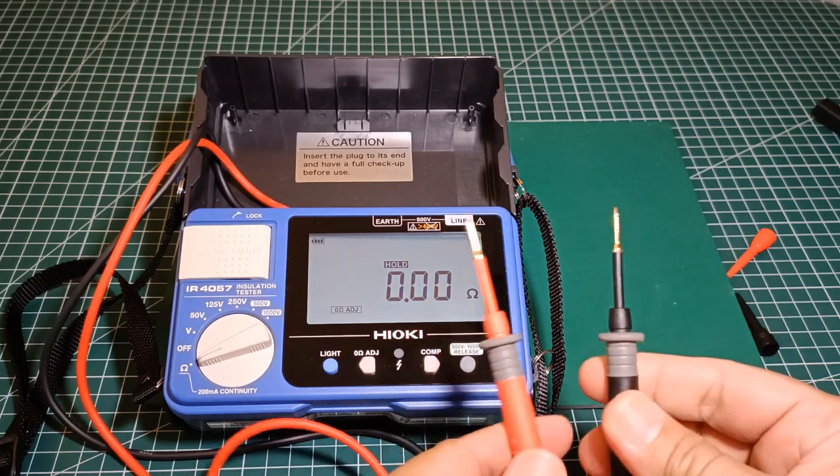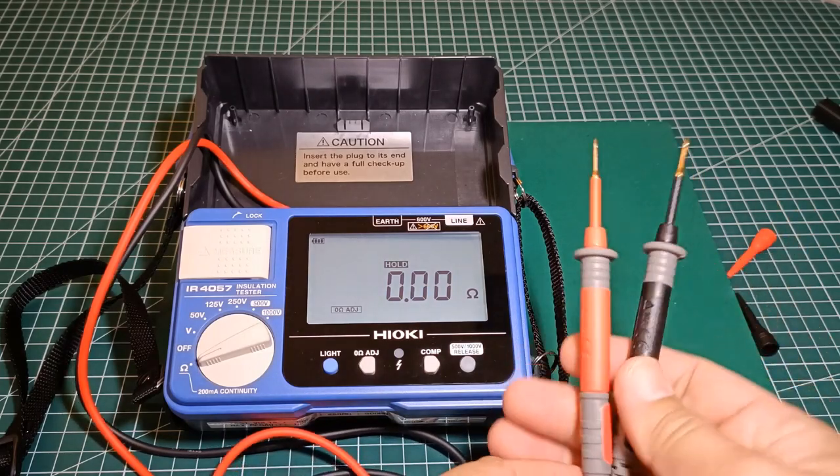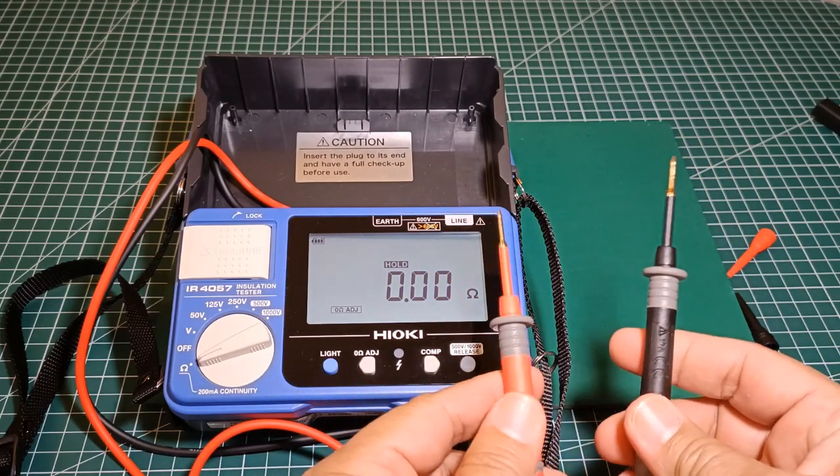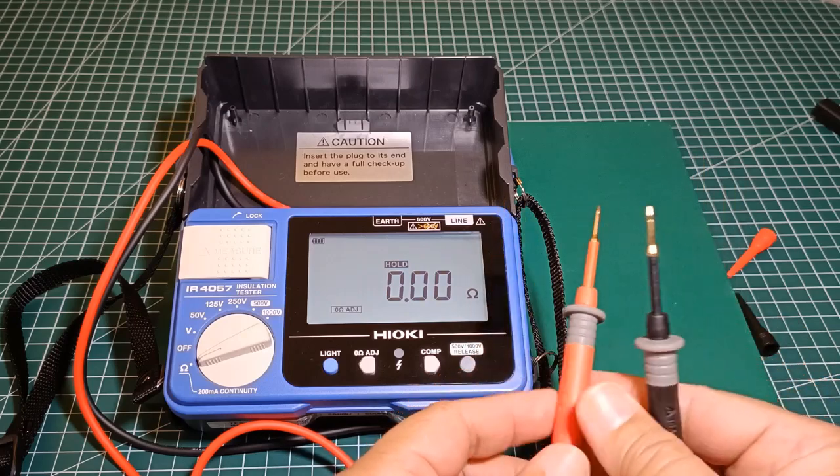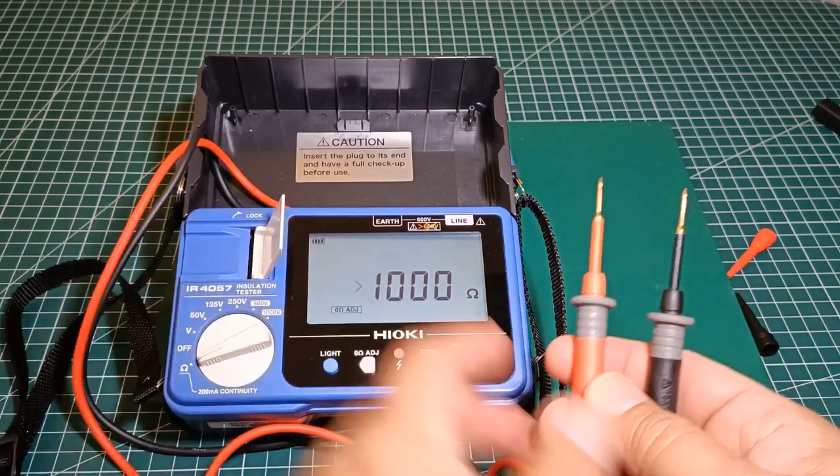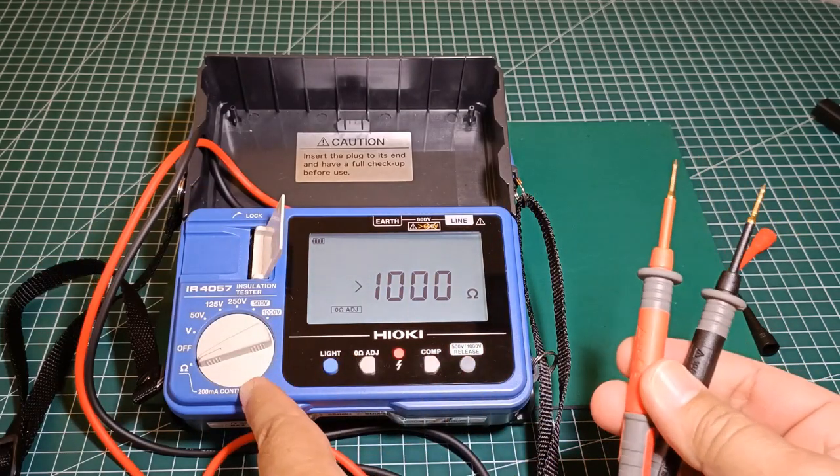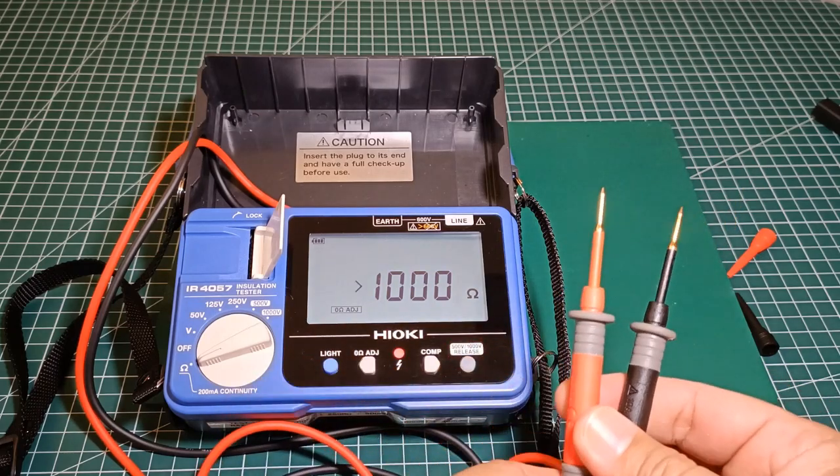As you can see, the IR4057 is equipped with a zero ohm adjuster to calibrate the resistance of the test leads to zero. Now we can use the IR4057 to measure low resistance values.